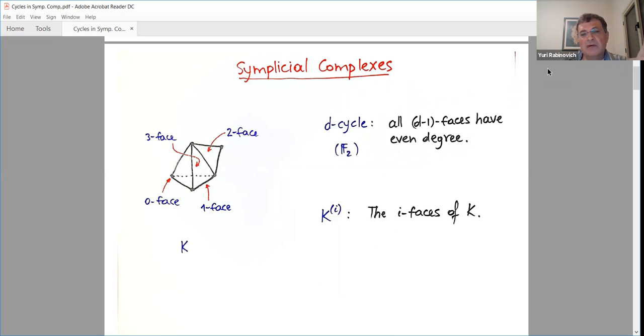We have faces of different dimension. The faces are closed under containment, so all the subsets of a certain face are faces as well. And this is the object. We'll be interested in the d-cycles. In simplicial complexes, this is subsets of d minus one faces which have even degree, so we'll be working over F2. And k_i will denote the i-faces of the complex. Please ask me any questions - this is the place to ask because I didn't define it properly.